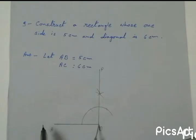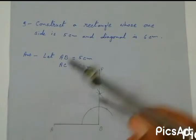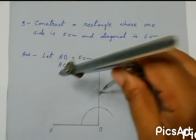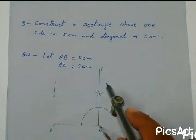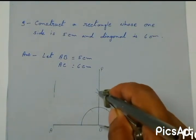And now I am drawing the 2 other sides of the rectangle which are CD and AD. CD is equal to AB and AD is equal to BC.